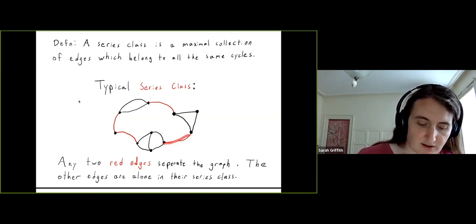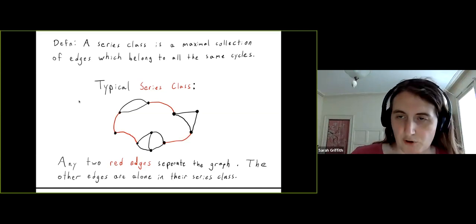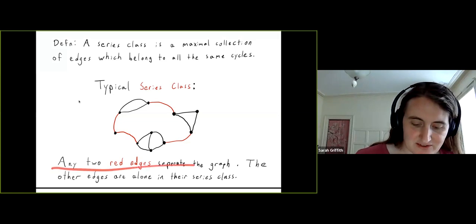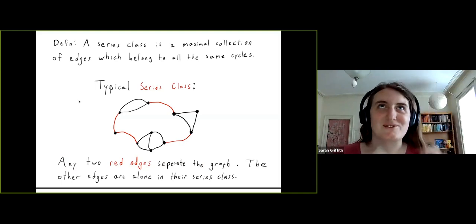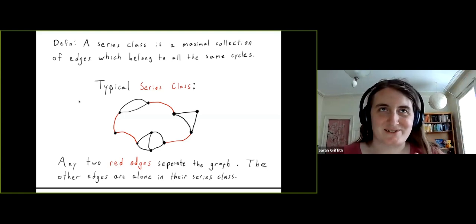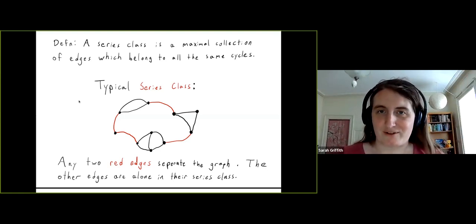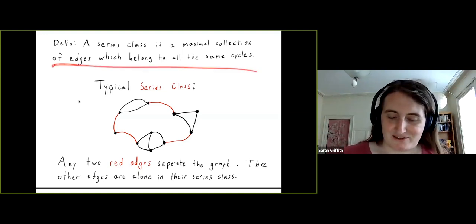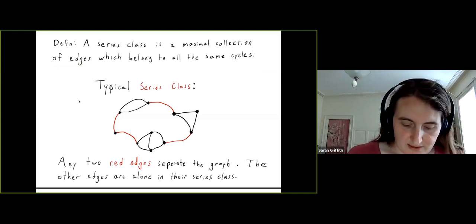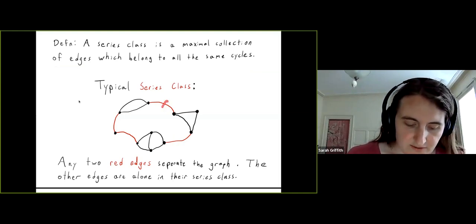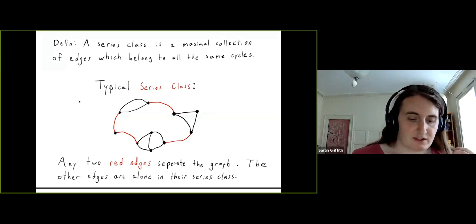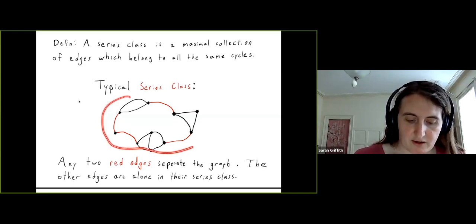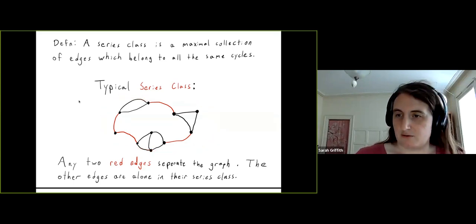The red edges in the example are the only ones belonging to a series class with more than one member. These edges are responsible for any ambiguity when lifting an isomorphism of the Jacobian of this graph to an isomorphism of matroids.